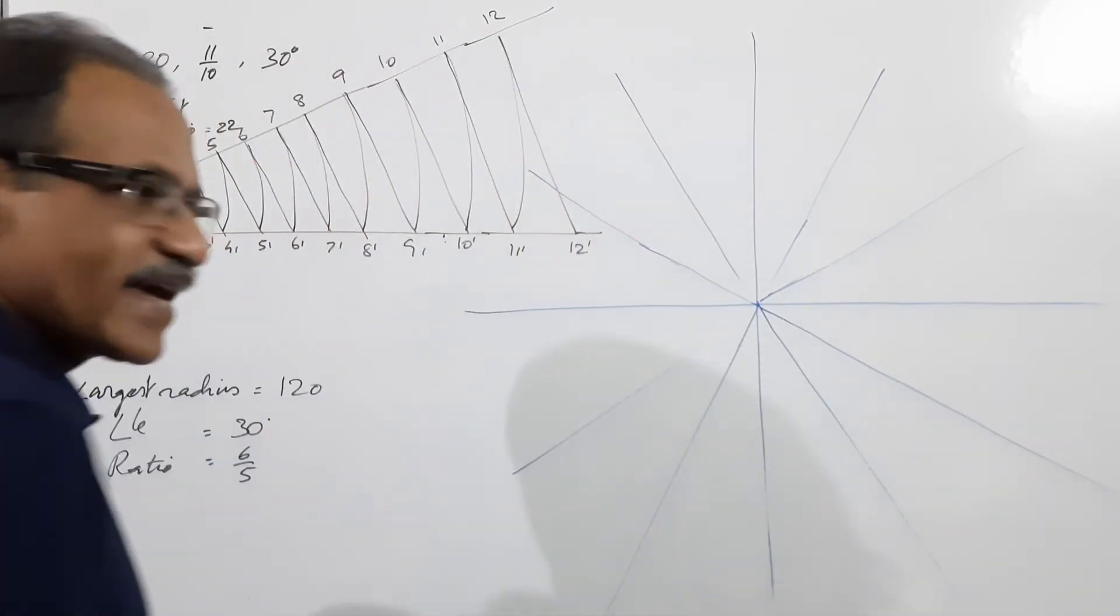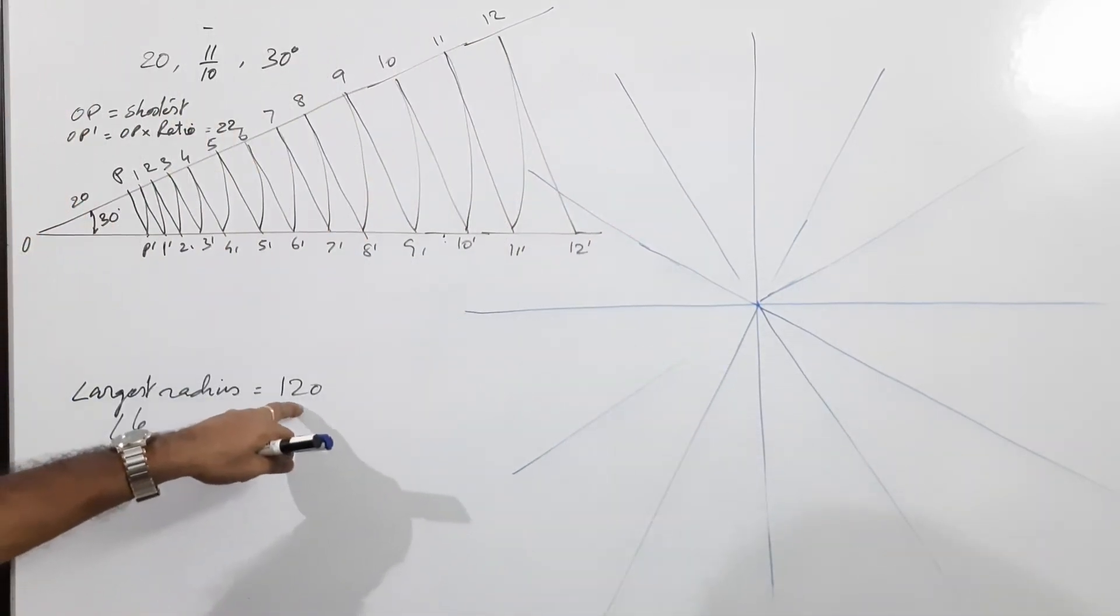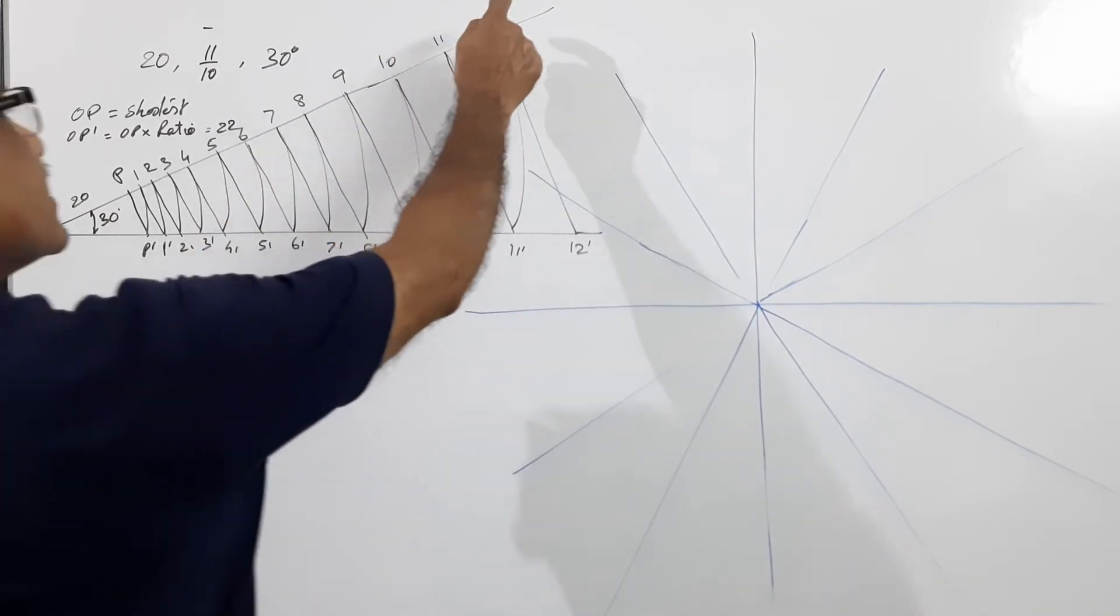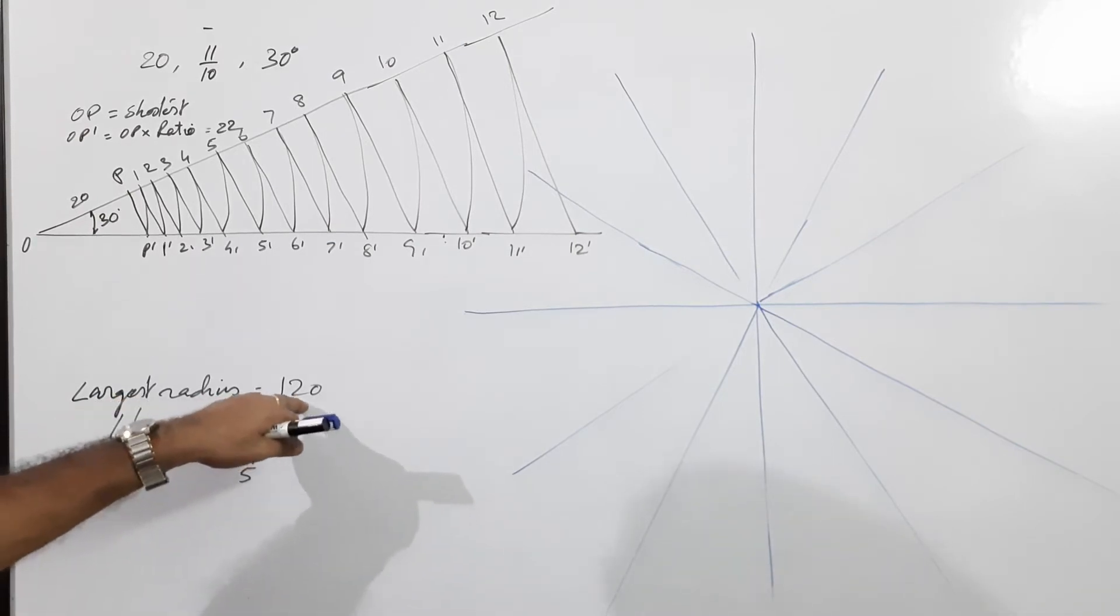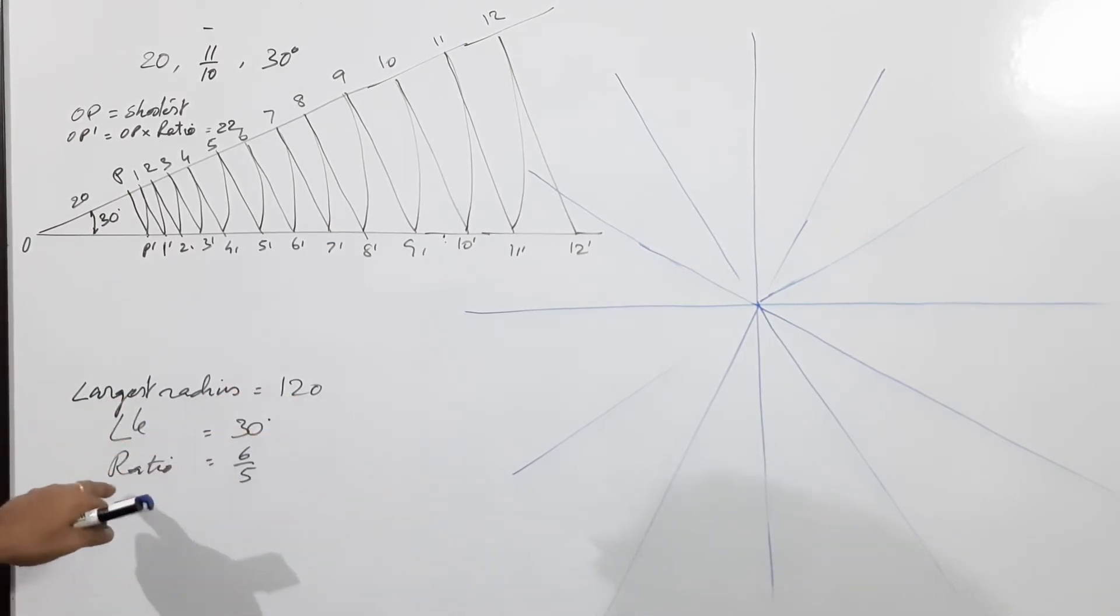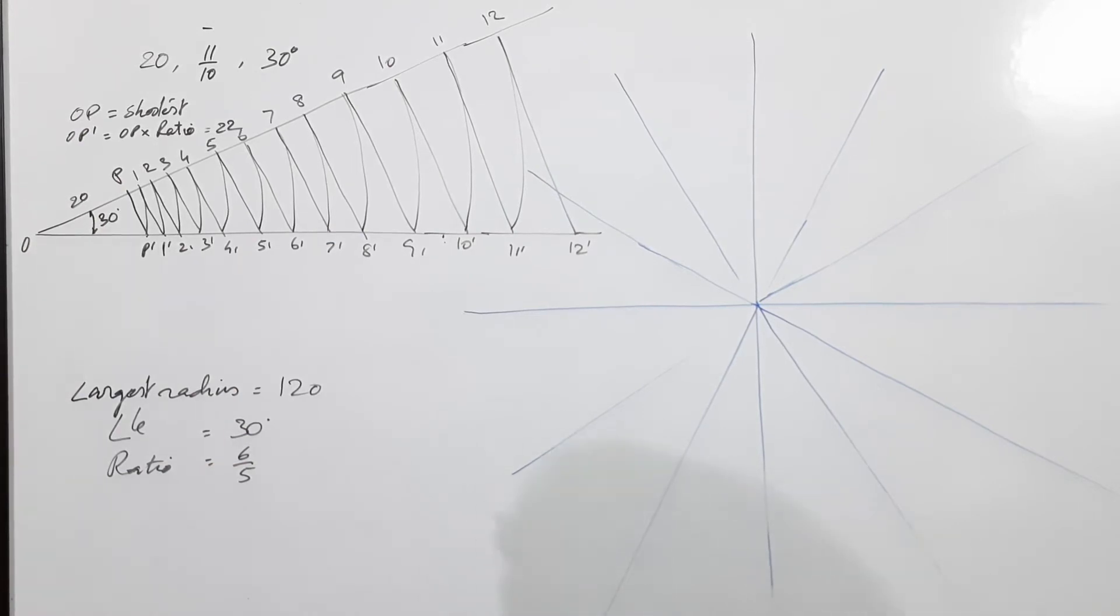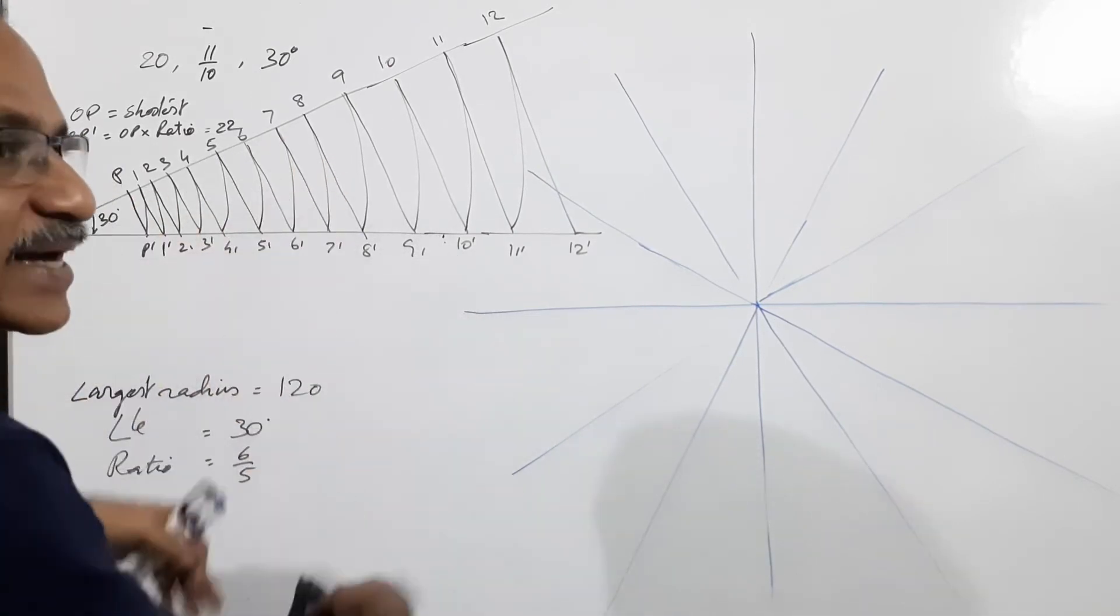In this particular case you are given the largest radius. What is the largest radius? Largest radius is 120. Angle is 30, ratio is 6 by 5. Let us discuss how to draw that. I draw this to compare both.